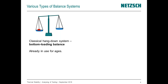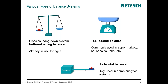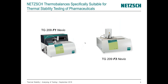There are different types of balance systems. The oldest, found several millennia before Christ, is the classical hang-down system where the balance beam is on top and the sample and reference hang from it. Another commonly used technique is the top-loading balance system, and there is also a system with a horizontal balance arm. I would like to focus today on the top-loading type because all the balances we produce are top-loading balances.